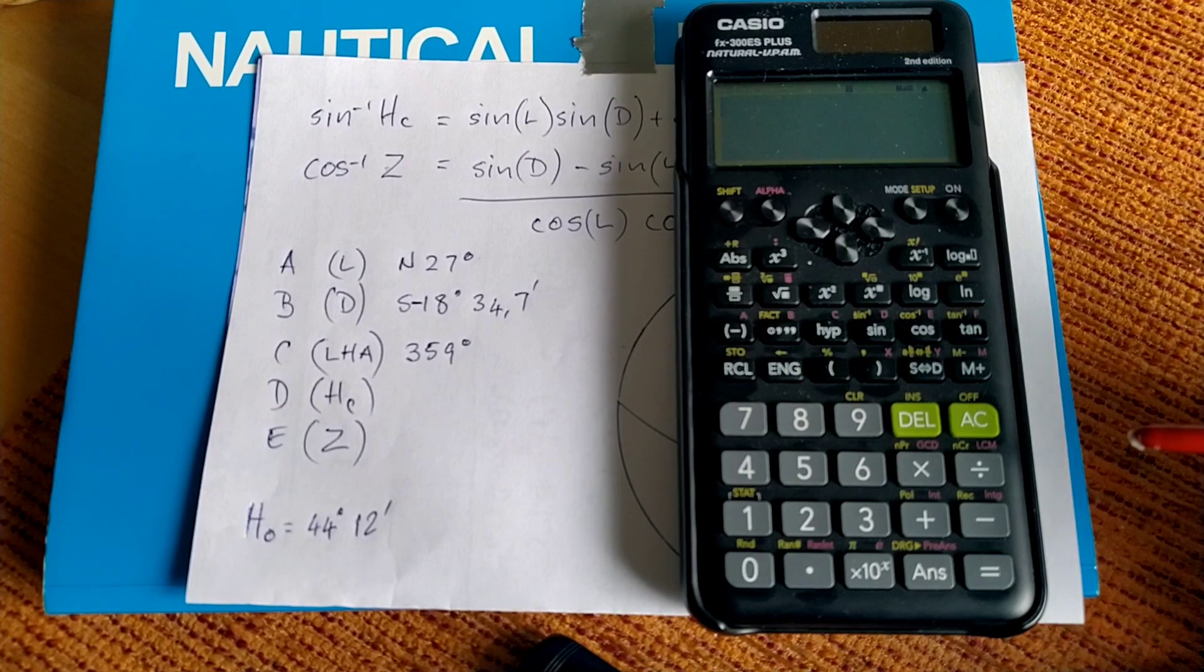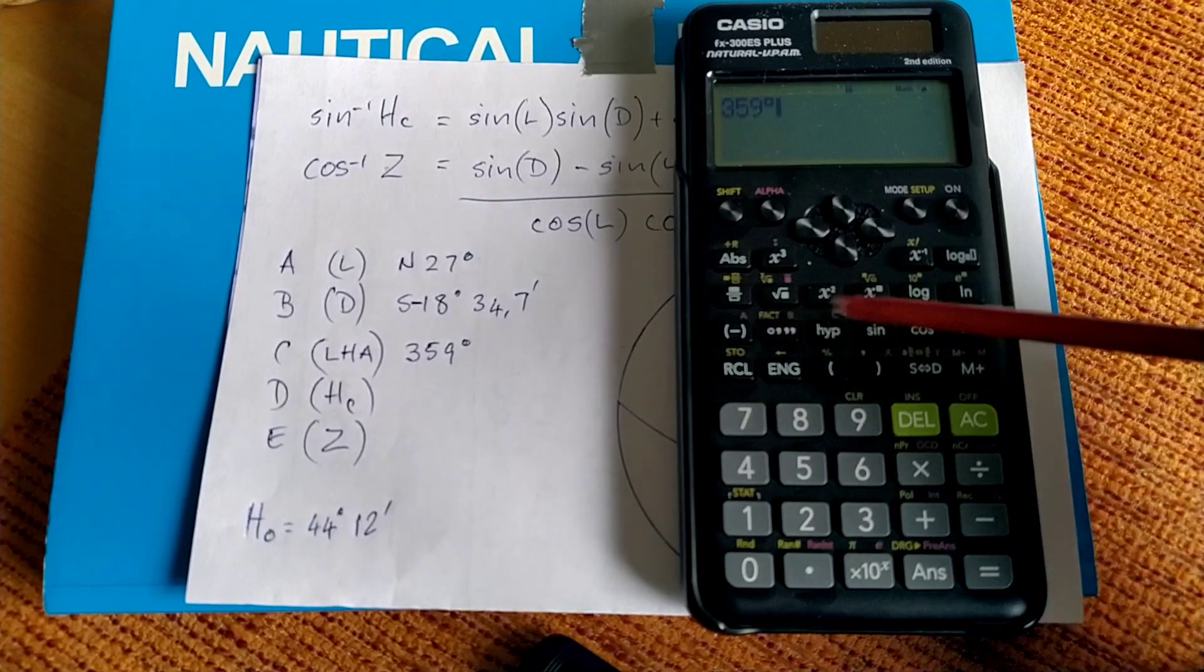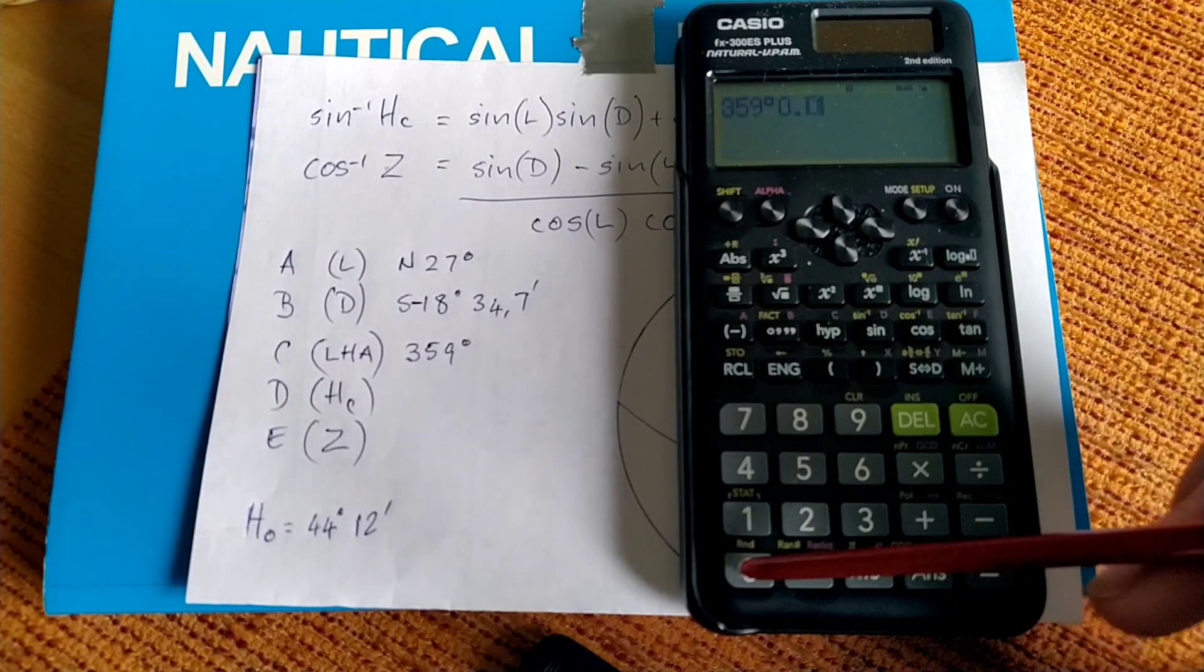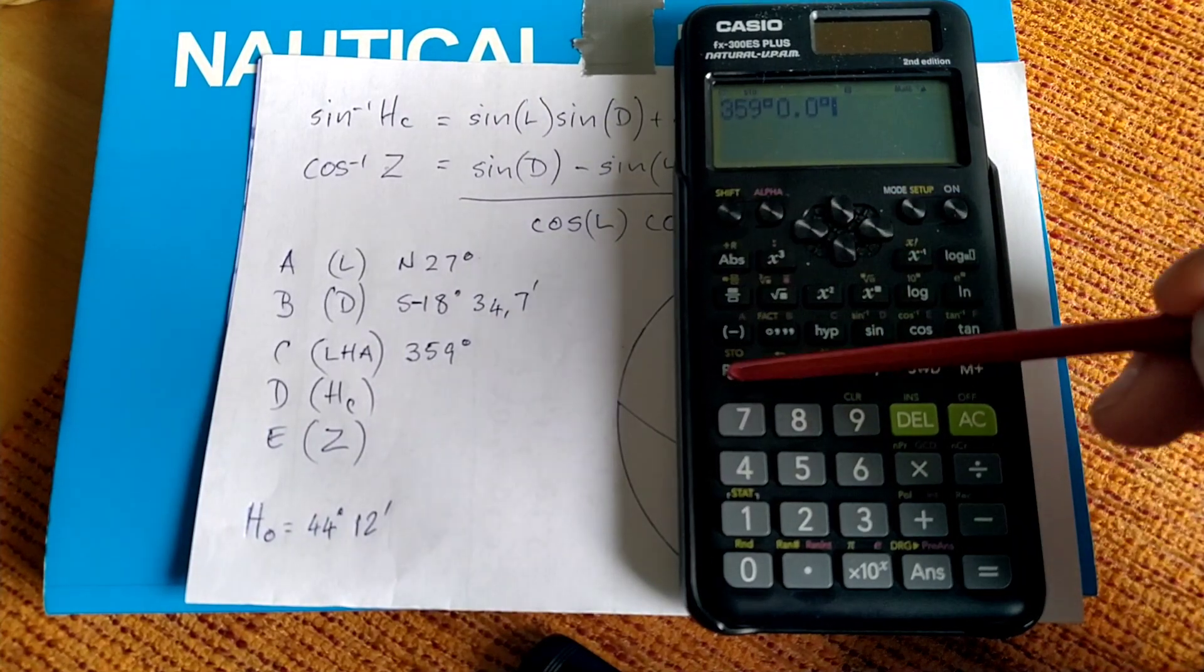Now we're going to assign the local hour angle to C. 359 degrees, 0.0 minutes. And we shift, store, to C.